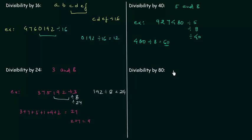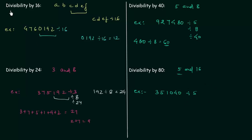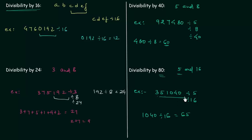The last rule is divisibility by 80. A number is said to be divisible by 80 if it is divisible by both 5 and 16. For example, the number 351040: for divisibility by 5 we consider the units place, which is 0, so it is divisible by 5. For divisibility by 16 we consider the last 4 digits, which are 1040. 1040 is divisible by 16 and equals 65. So it is divisible by 16, and we can say that 351040 is also divisible by 80.